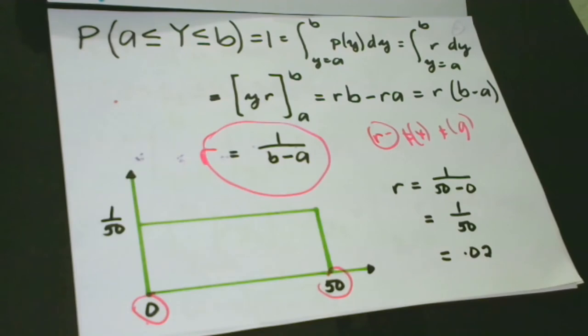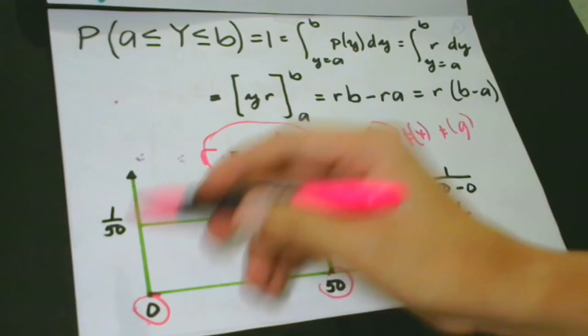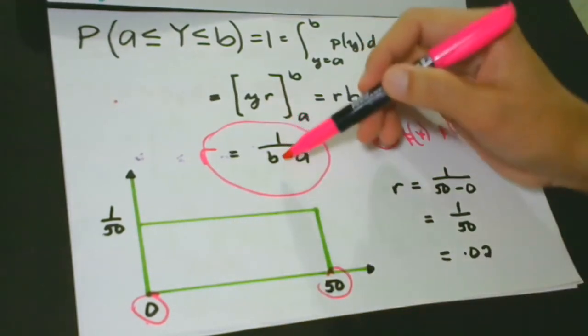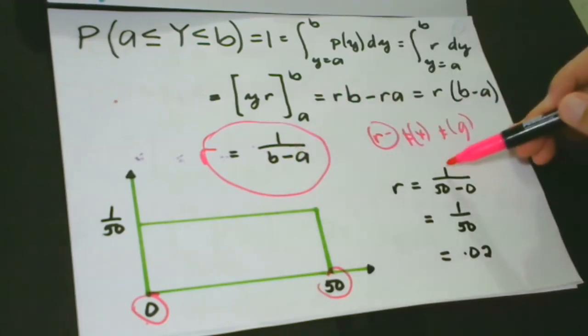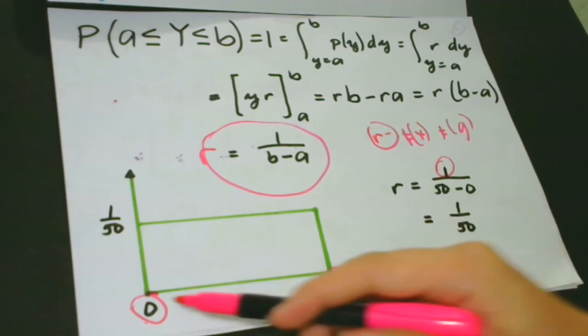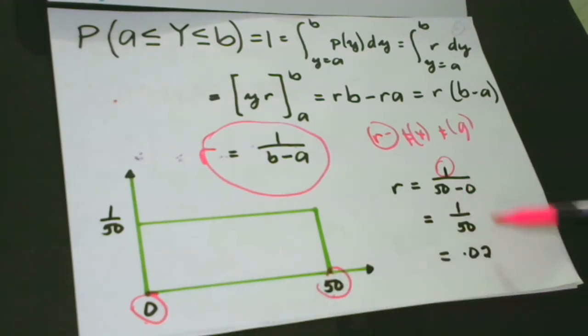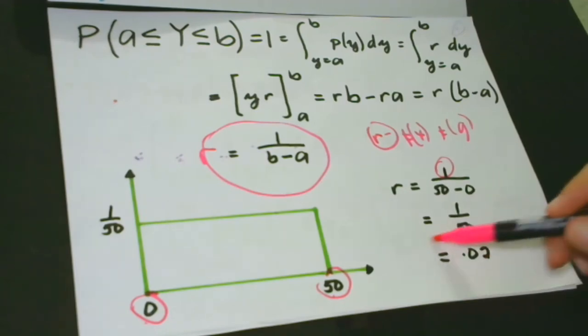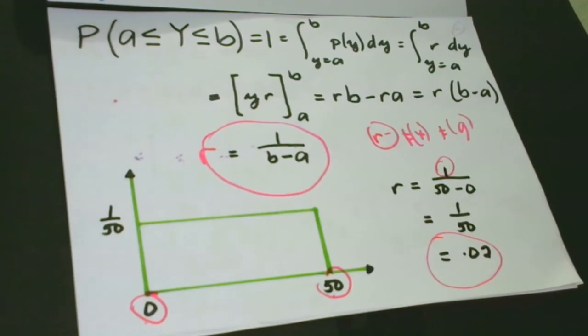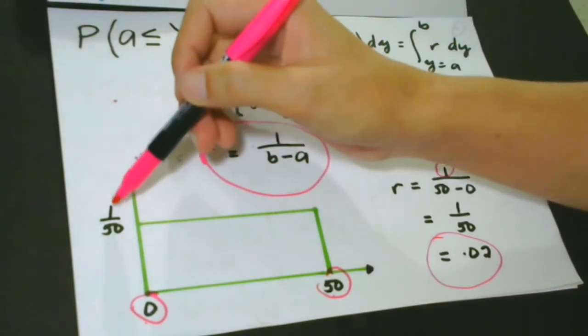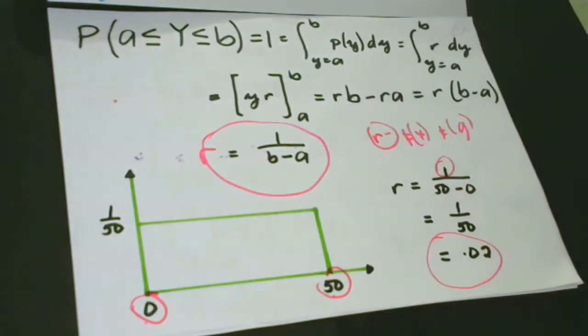In other words, the probability that the bus will arrive between 0 to 50 minutes. Given the value of our base, we can compute for the value of our height using this formula and how to do that. 1 over b minus a. This is the constant. B, the value of our b is 50. So, minus 0, which is the value of our a. 1 over 50. Because 50 minus 0 is 50, then we get 0.02. That means the value of our height here is 1 over 50 or 0.02. Simple? If you have some questions, you can just comment down below.